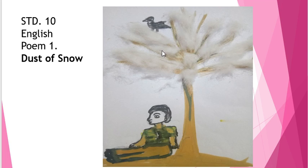Here both the symbols — the Hemlock tree and the crow — they are considered to be bad omens. We also have dust of snow. As the title of the poem signifies, here the tree is covered with dust and that's why the snow particles, the snowflakes, they are called dust of snow.